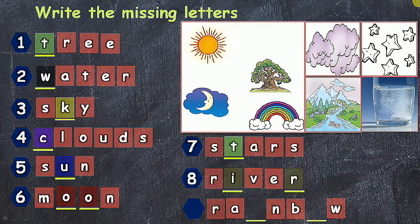Next, last one, that is rainbow. I and O, these two letters are the missing letters. R-A-I-N-B-O-W, rainbow.